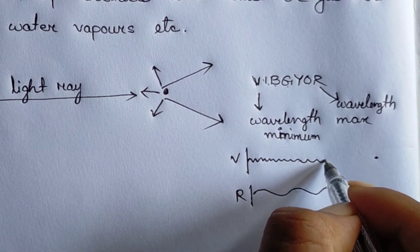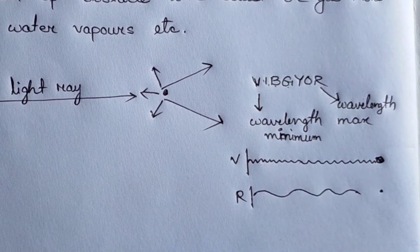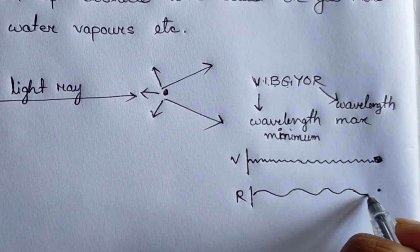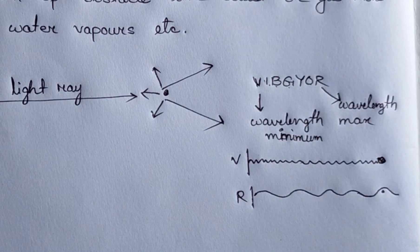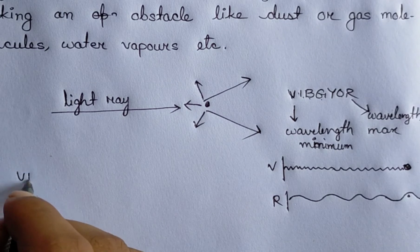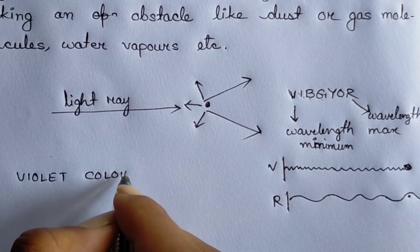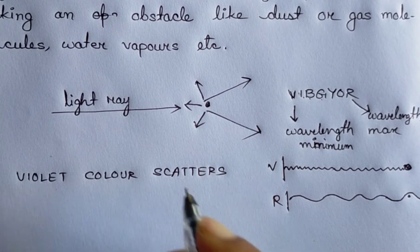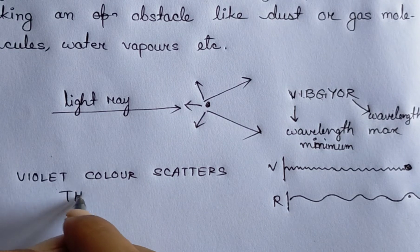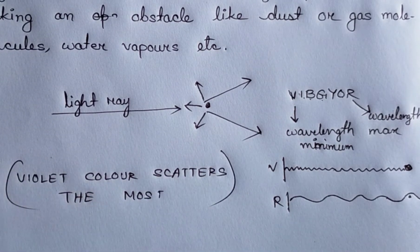Violet - because violet color has the shortest wavelength, it scatters the most. Therefore we can write: violet color scatters the most.